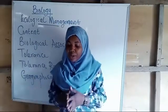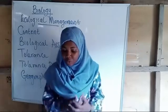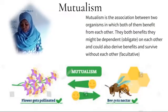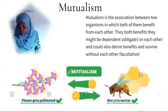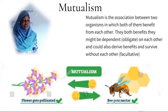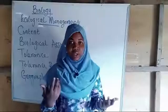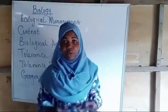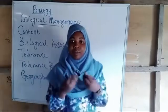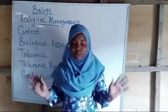Within symbiosis, the first type is mutualism. For mutualism, it is the association between organisms in which both of them benefit from each other. When something is mutual, both are gaining and not harming one another — it's a 50-50 relationship. Both organisms are benefiting from this association.